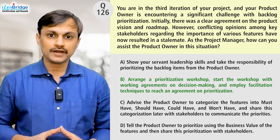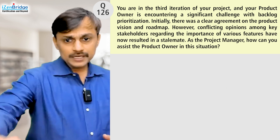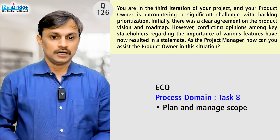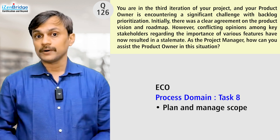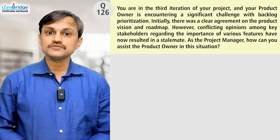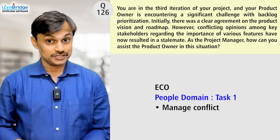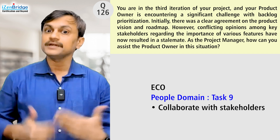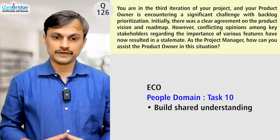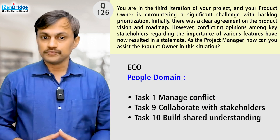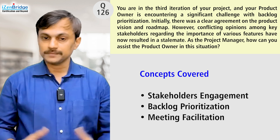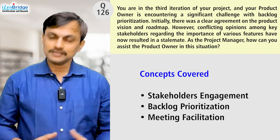That makes option B the perfect choice for this question. From the exam content outline, this maps to the Process domain, Task 8 — plan and manage scope — because we are prioritizing requirements and working with the product backlog. It also touches the People domain: Task 1 (manage conflict), Task 9 (collaborate with stakeholders), and Task 10 (build shared understanding about project value). Overall, this topic focuses on stakeholder collaboration, prioritization techniques, and meeting facilitation.